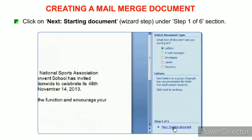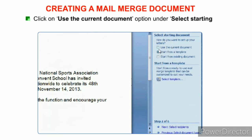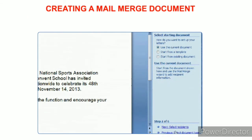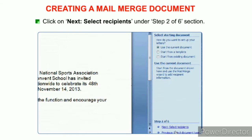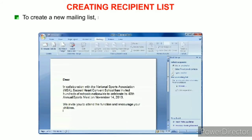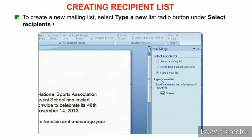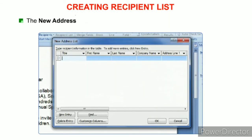Select the Letters option under Select Document Type, then click Next: Starting Document under Step 1 of 6. Click Use the Current Document option under Select Starting Document, then click Next: Select Recipients under Step 2 of 6. To create a new mailing list, select the Type a New List radio button and click Create. The New Address List dialog box will appear.